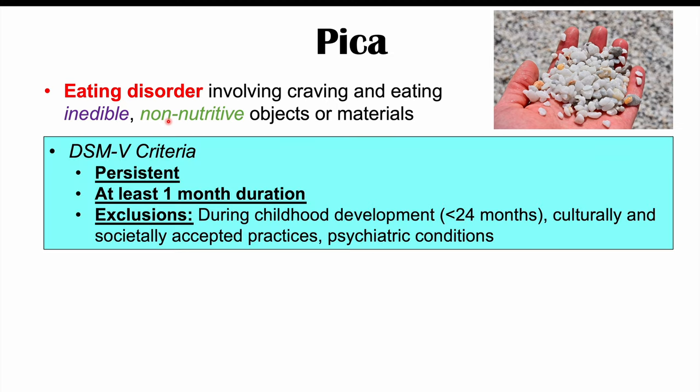Pica is this eating disorder where people are craving and eating things that they shouldn't be eating — non-edible or non-nutritive objects or materials. The DSM-5, or the Diagnostic and Statistical Manual of Mental Disorders, has particular criteria for making the diagnosis of pica: eating of inedible non-nutritive objects persistently, not rare occurrences, and occurring for at least one month in duration.